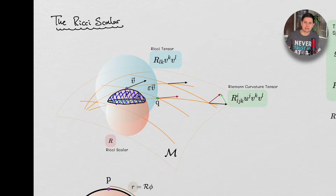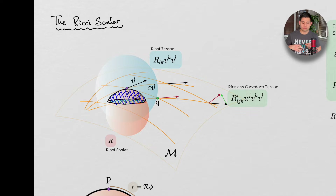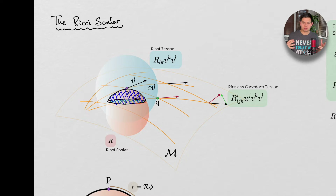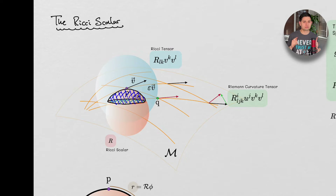All right, hey guys, what's going on? So today we are going to be going over the Ricci scalar. The Ricci scalar is super important in helping us understand later topics that are going to be touched upon, such as the Lagrangian in GR and many other very important topics. So without further ado, let's get straight into the content.